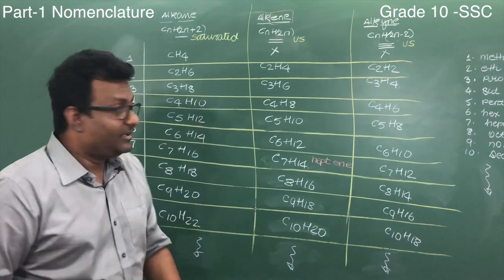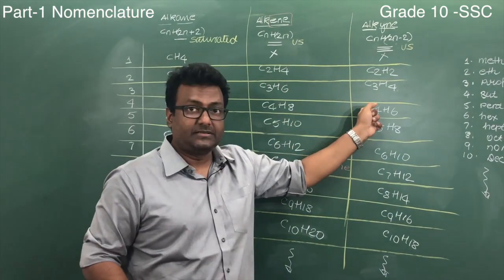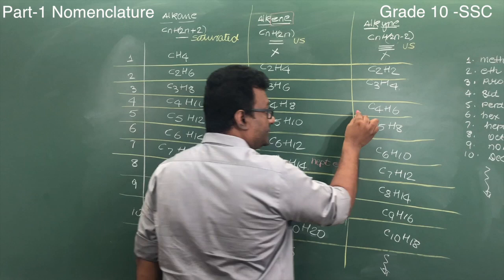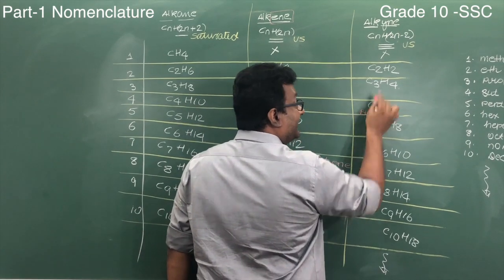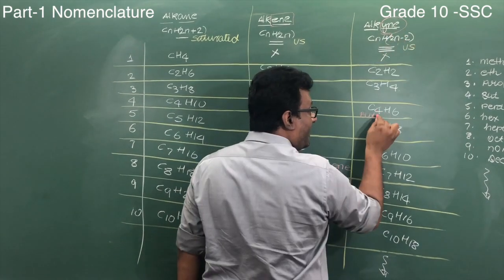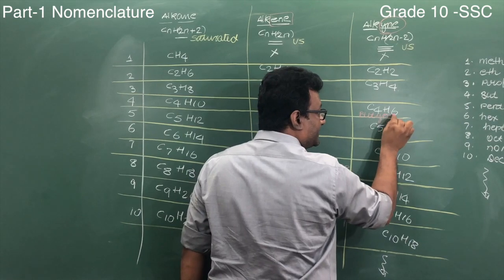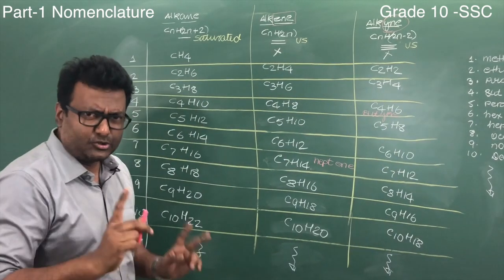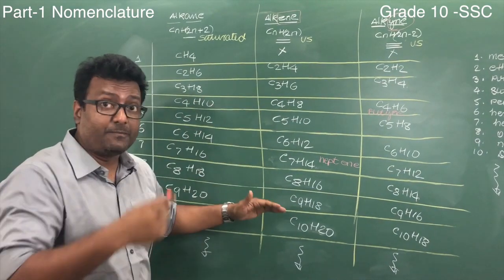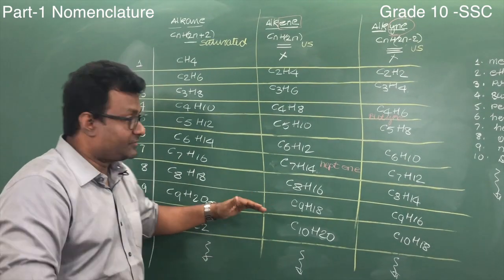Now let's say I want to name this. How many carbon atoms? Four. Four is but. So I take but. It belongs to which family? The family of yne. So I'll say butyne. I'll do two more, and then the remaining is for you. You'll pause the video and finish this.